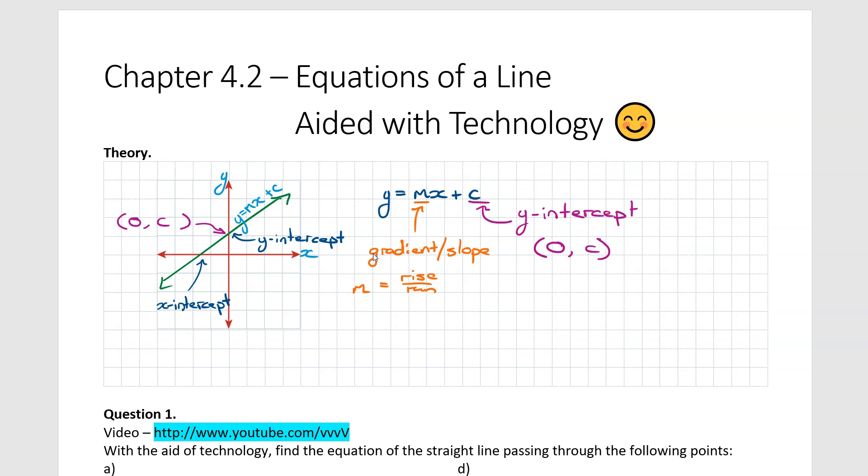the y-intercept, the concept of y equals mx plus c where c is the y-intercept, and m refers to the slope of this line or the gradient of this line.